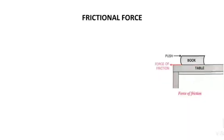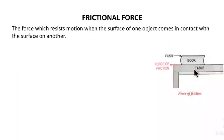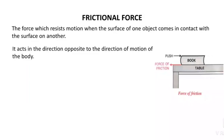Here in the picture we have a book on the table, and the book and the table are in contact with each other. The force which resists motion when the surface of one object comes in contact with the surface of another object is the frictional force. The book and the table are in contact, and if the book is pushed towards the right, then there is an opposing force which develops in the opposite direction — that is the force of friction. It always acts in the direction opposite to the direction of motion of the body. Since the motion of the body is towards the right, the frictional force develops towards the left.